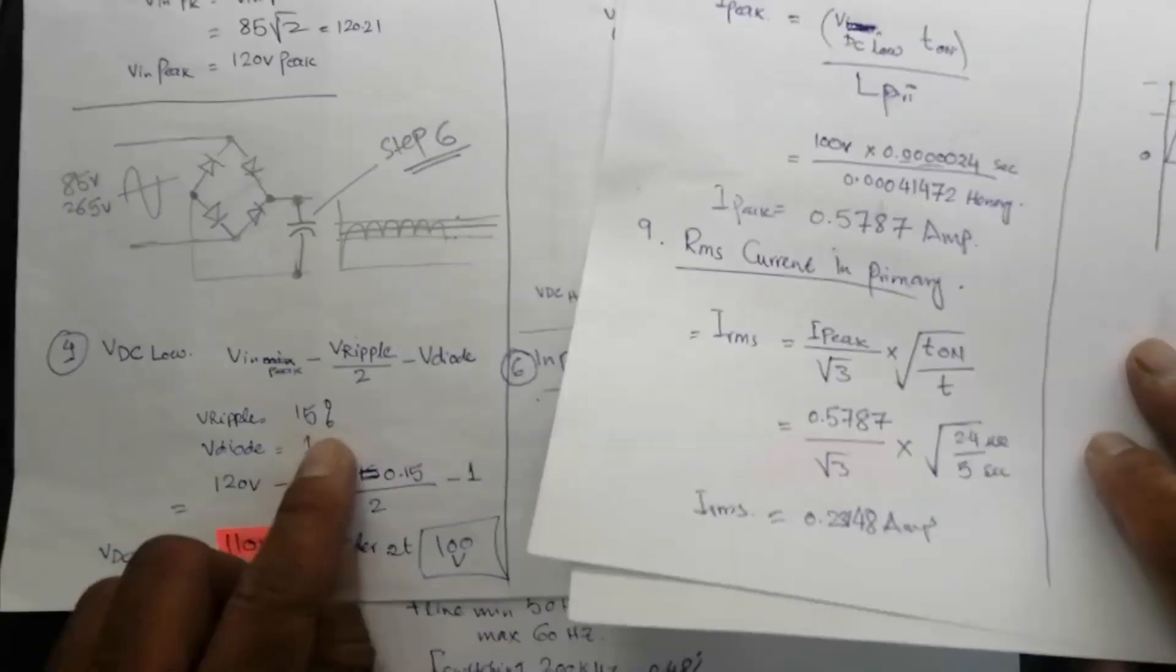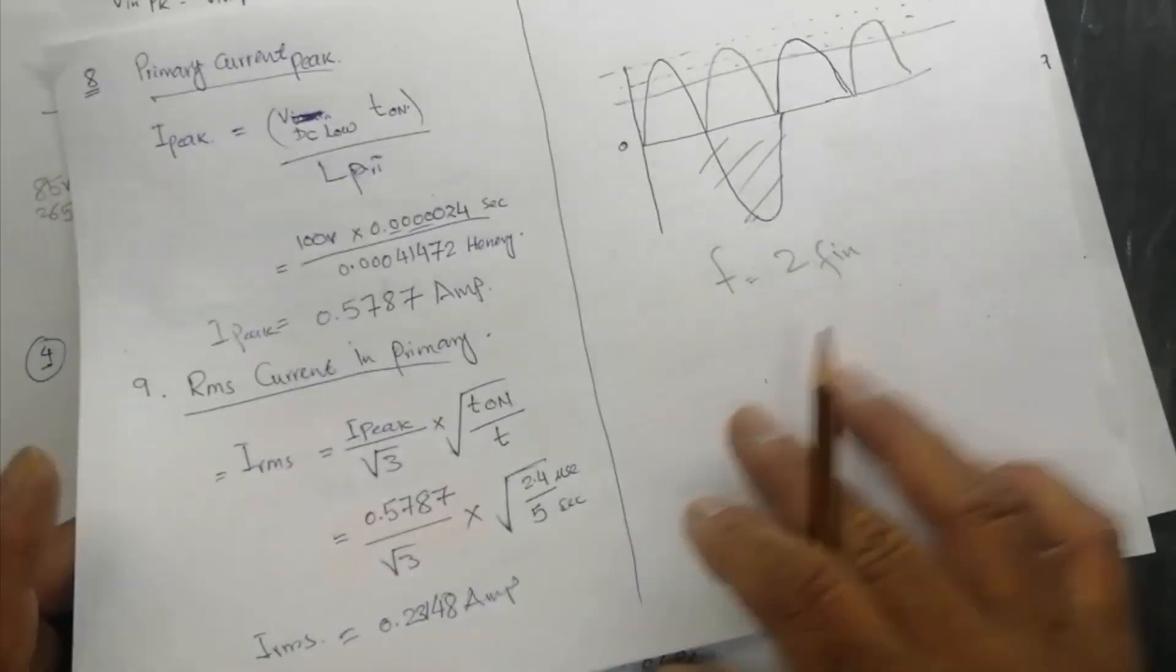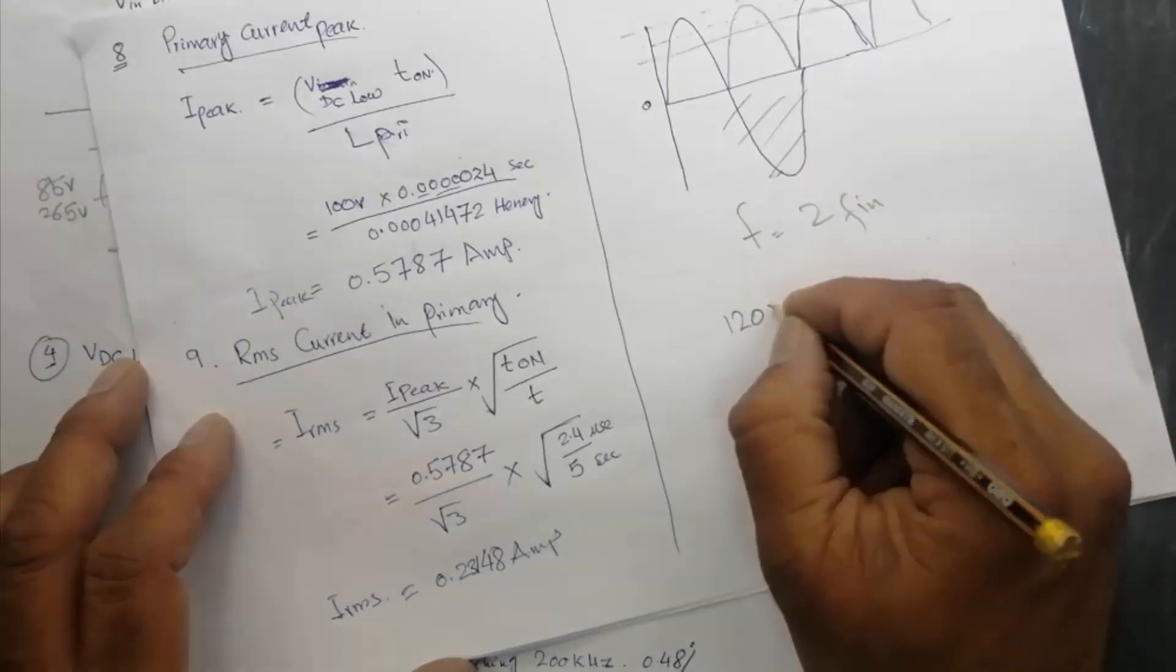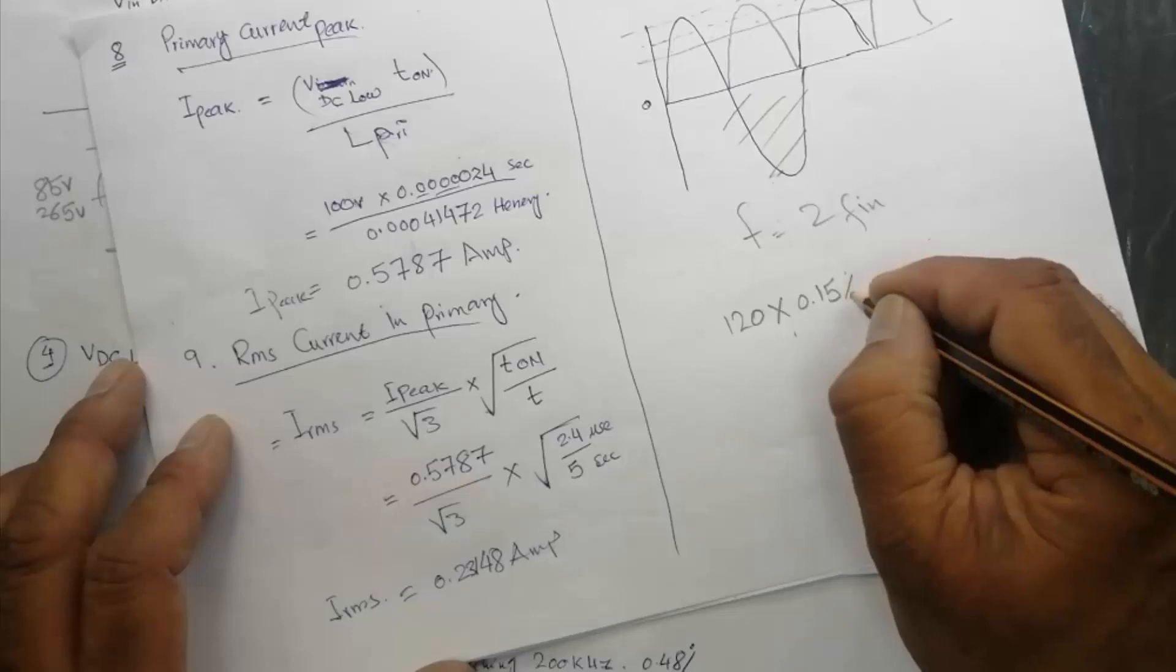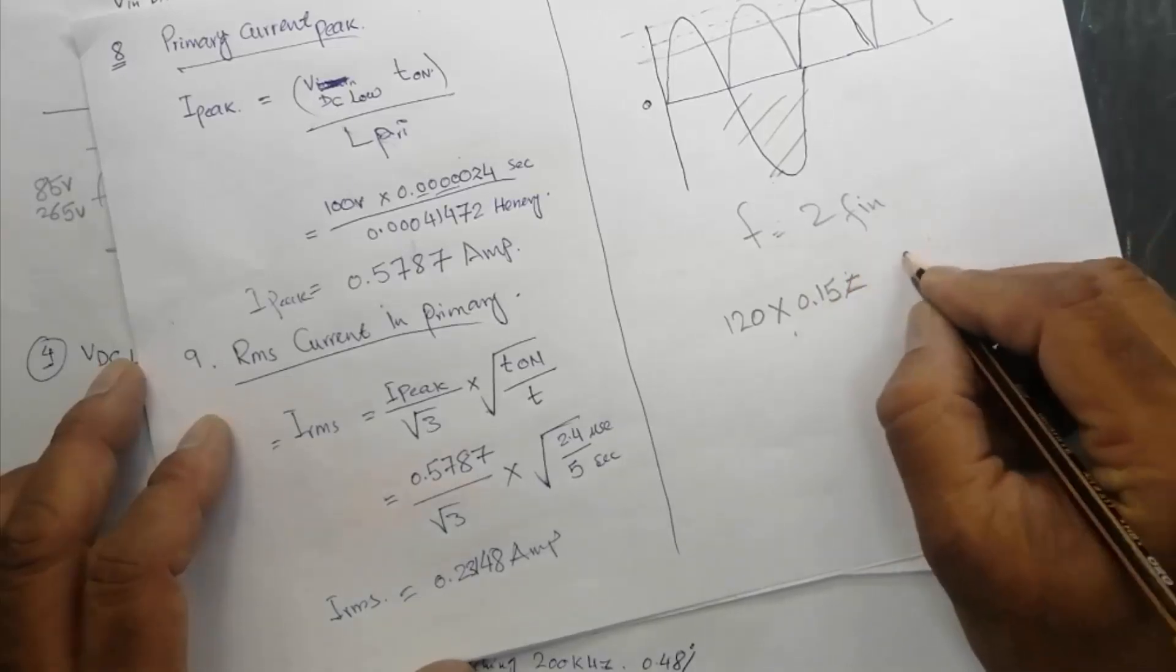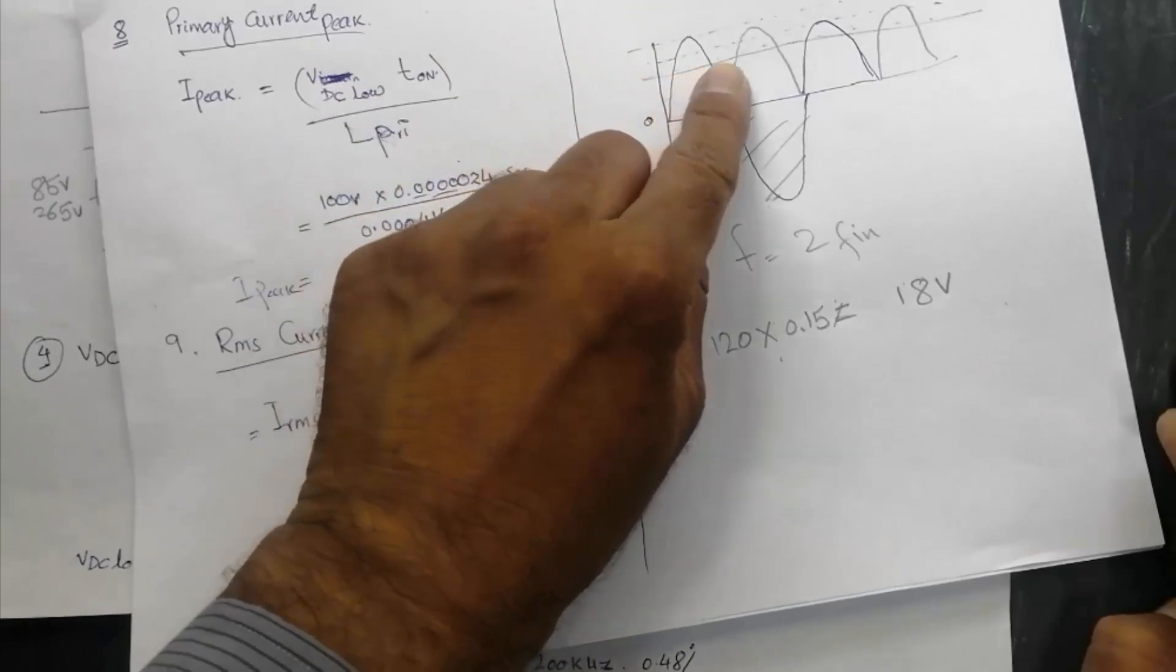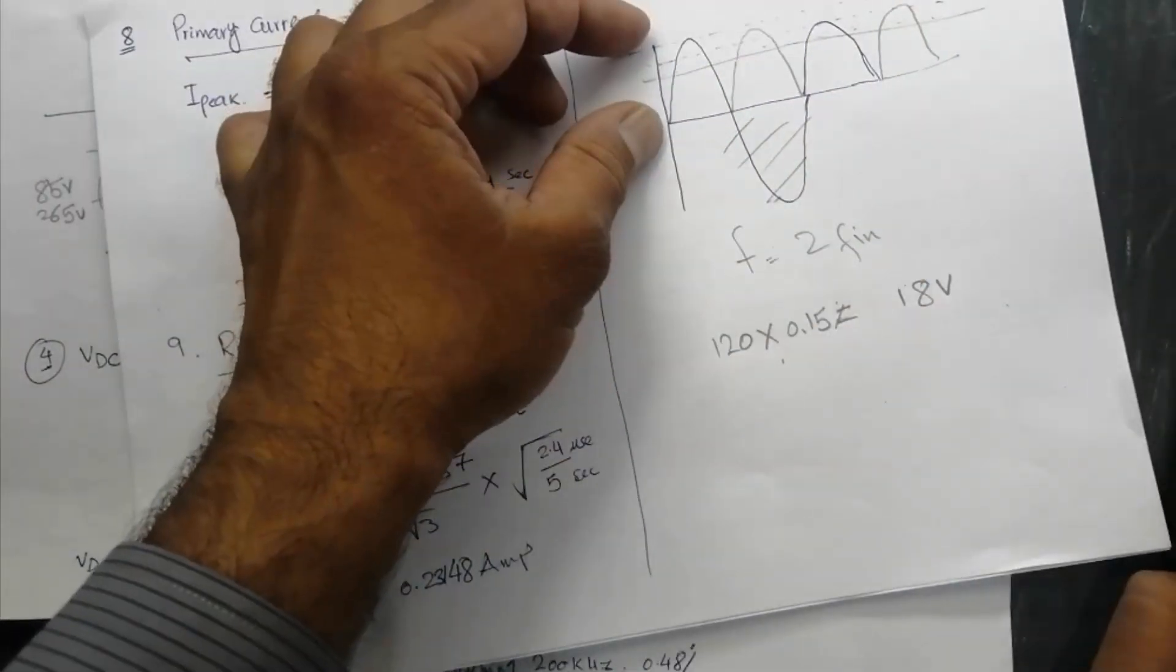But in our case, I am selecting fifteen percent. So 120 volt peak multiplied by 0.15, that will be 18 volt peak. The topmost peaks, the ripples in pulsating DC, that is 18 volt.